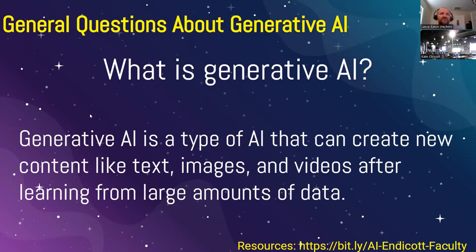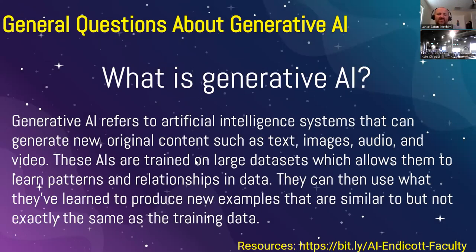And so this is the answer it gave me: 'Generative AI is a type of AI that can create new content like text, image, and videos after learning from large amounts of data.' That's a decent description and one that can still feel a little effusive. I think it's helpful for some folks, but for others it still doesn't really reveal what it is. So I then asked Claude to elaborate further, and it came up with: 'Generative AI refers to artificial intelligence systems that can generate new original content such as text, image, audio, and video. These AIs are trained on large datasets, which allow them to learn patterns and relationships in the data. They can then use what they have learned to produce new examples that are similar but not exactly the same as the training data.' That's definitely a clearer idea of what generative AI is.